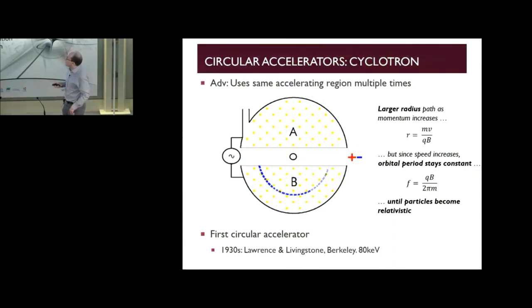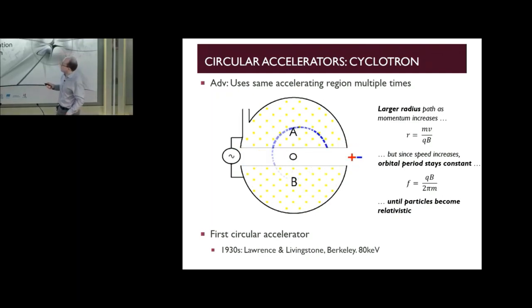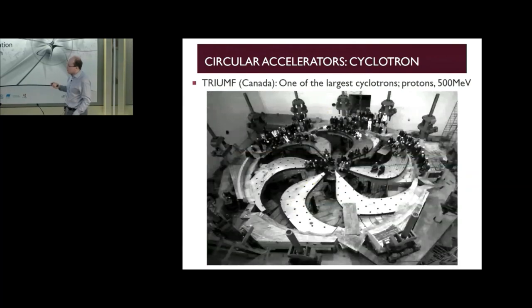With the cyclotron, the way you go up to higher energies is you can increase the voltage across this gap, but then you have to increase the strength of the magnetic field or increase the size of this machine to accommodate larger radius circular paths. In practice, you end up doing both and you end up with machines that look something like this.